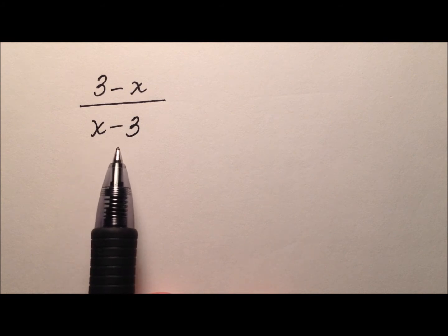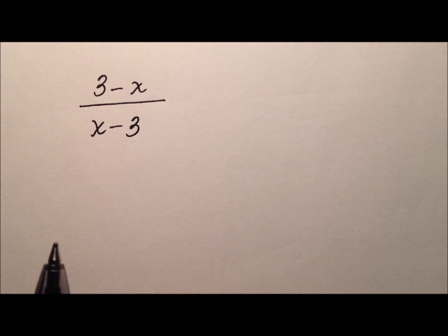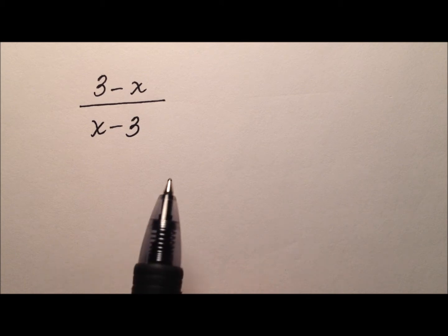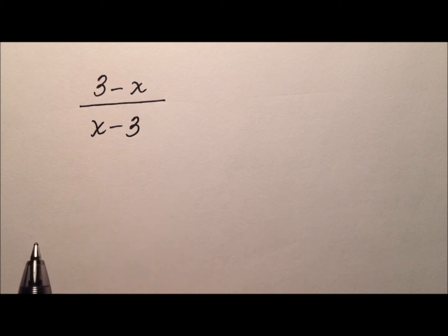So you'll see this form present from time to time in larger rational expressions, but we need to be able to simplify it. So these binomials seem to be very similar to one another, but we can't just cancel them out outright. We have to do one step first.